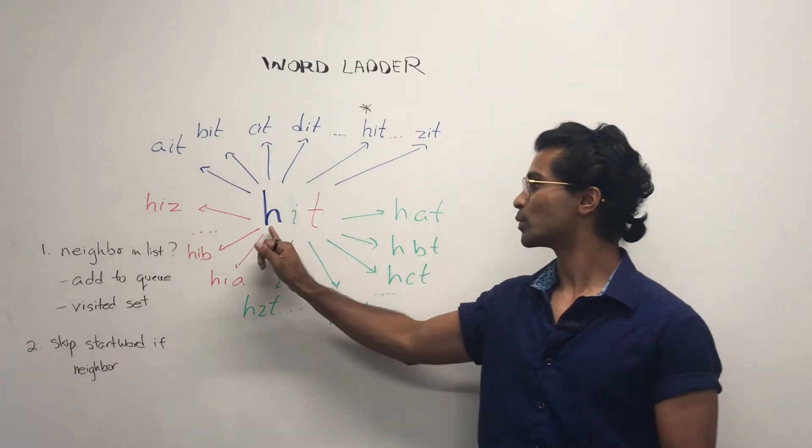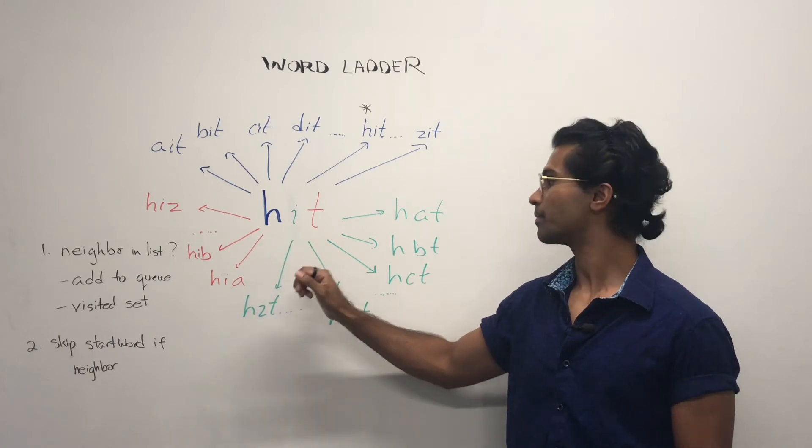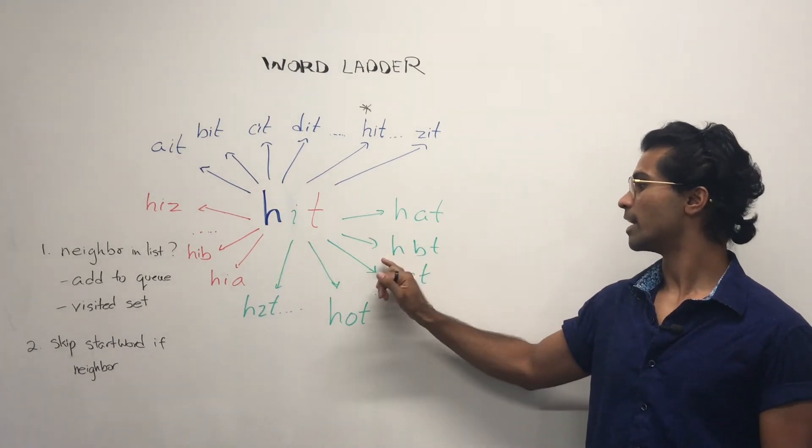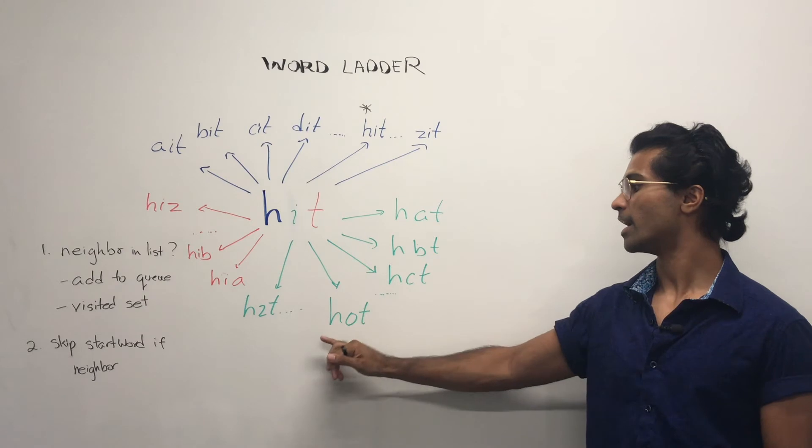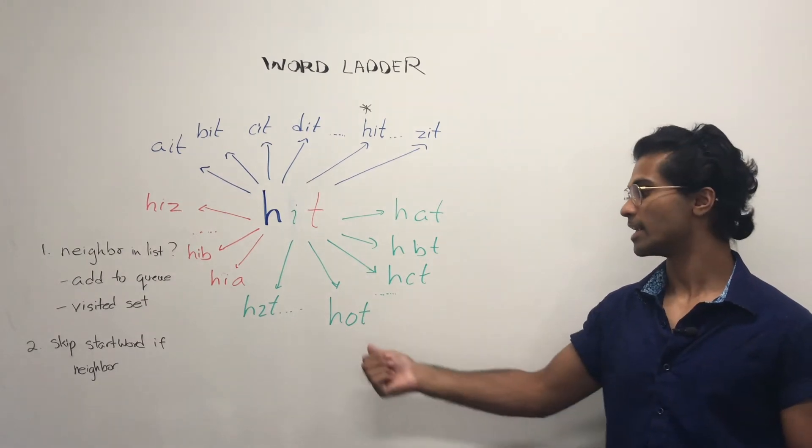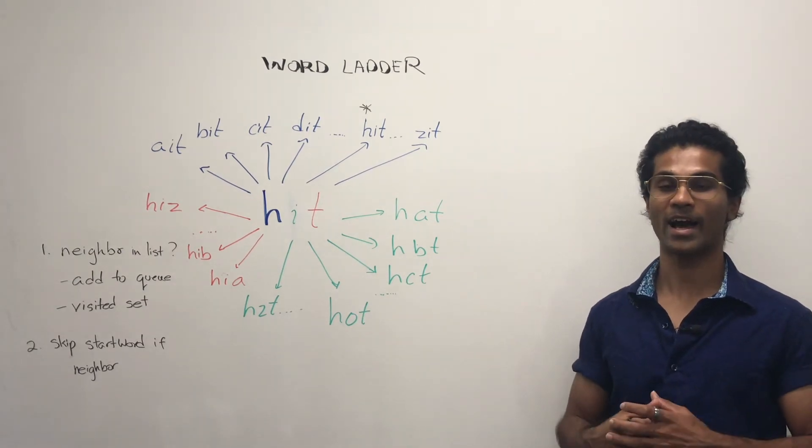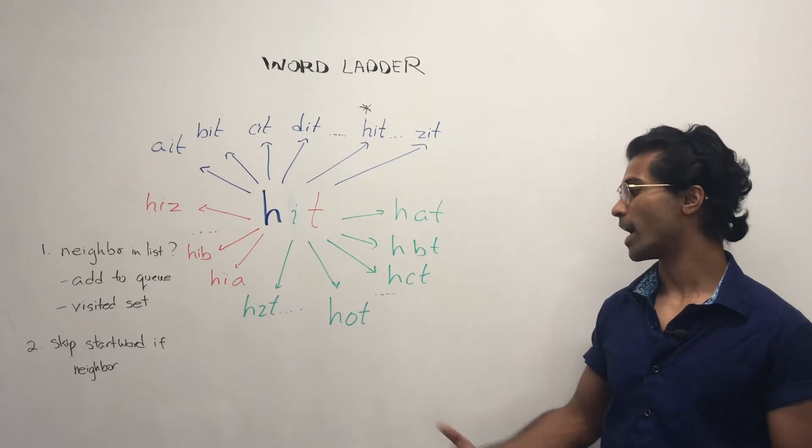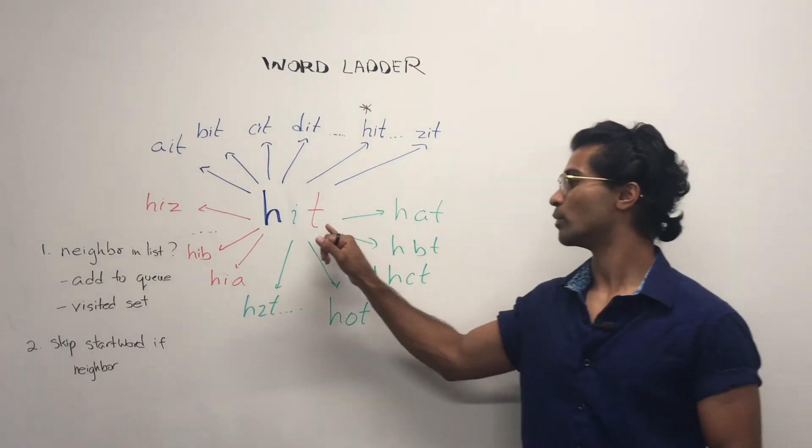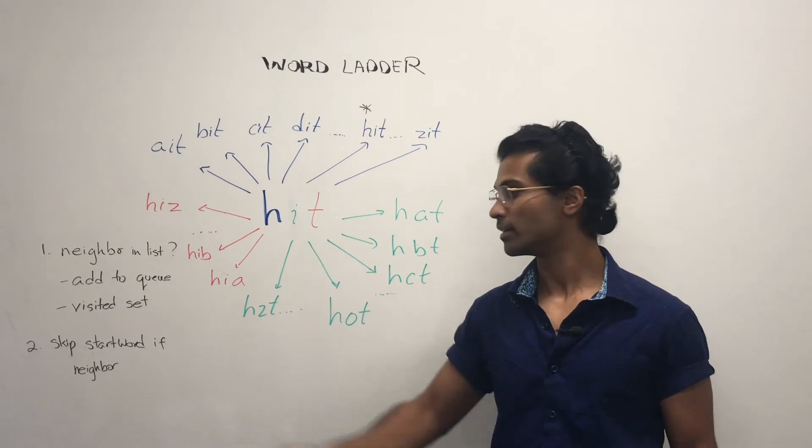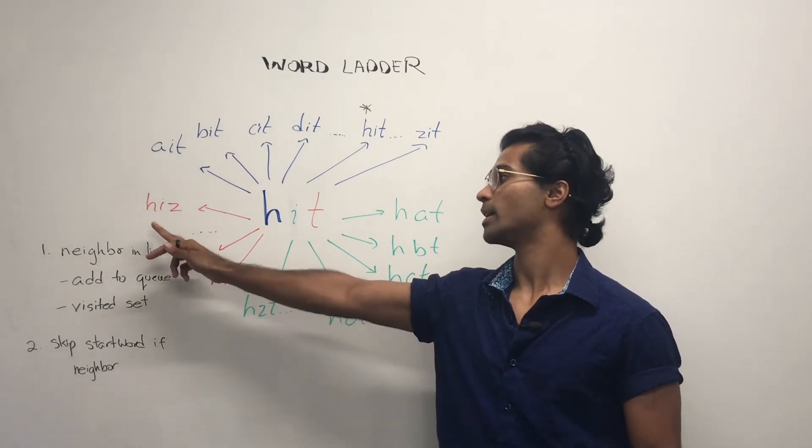So once we're done with H we go to the I, right? So HAT, HBT, HCT, HOT and we see that HOT is in the actual list. So we add it to the queue and we add it to the visited set. Finally we wrap it up with T the same way: HIA, HIB all the way to HIZ.